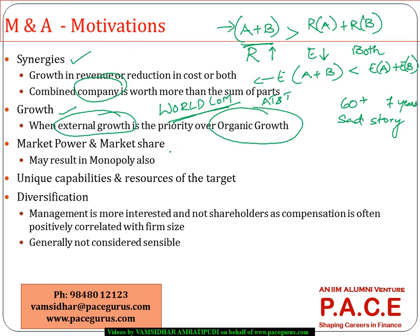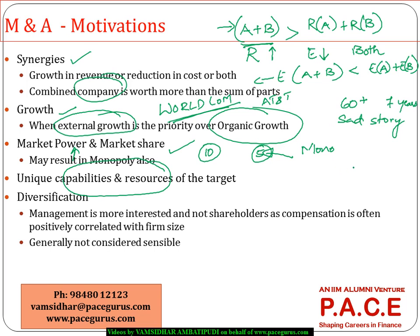Mergers and acquisitions also provide an increase in market share and market power. By consolidating a market — for example, reducing ten players to five through acquisitions — a company can dramatically increase its market share, potentially monopolizing or oligopolizing the market. Market power generally increases along with market share in M&A strategy. Sometimes a company may also observe unique resources in a target company as a motivation.